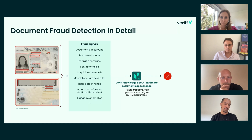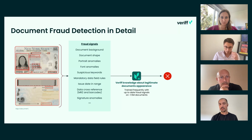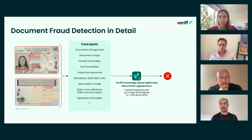In addition to that, by having all these signals separated — and knowing exactly where they come from and how they are computed — we can then query the model and ask: what was the most important signal for this particular fraud detection? Was it the background? Was it the shape of the document? What was it that made the model decide that the document was fraudulent?